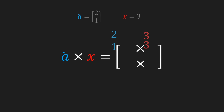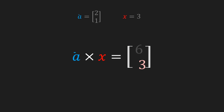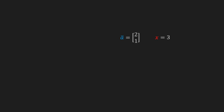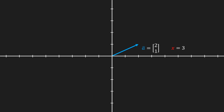As an example I'm gonna take a vector a and an x value. We can now fill in these values in our equation and calculate the result of a times x. To clarify these numbers, I'm gonna visualize vector a, and the result of its multiplication with x would be a new vector that is three times longer. In other words, this new vector is scaled by a factor of three, and that is why we call x a scalar.